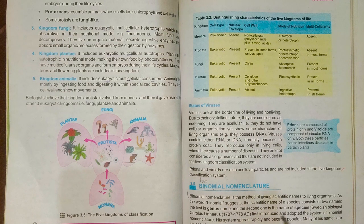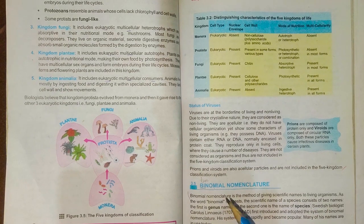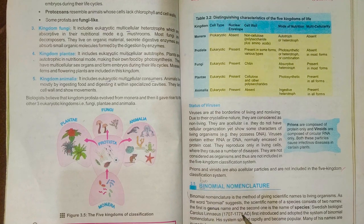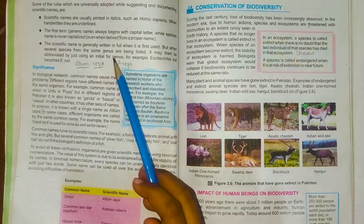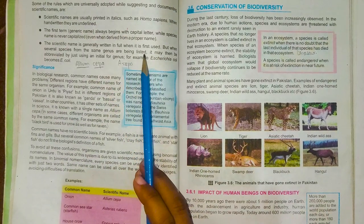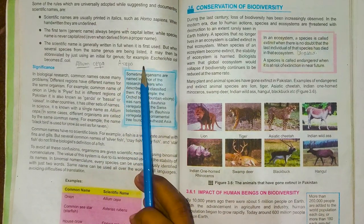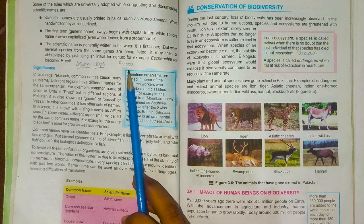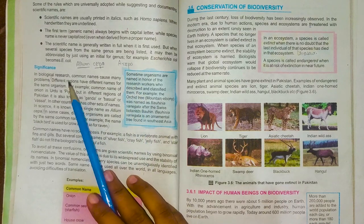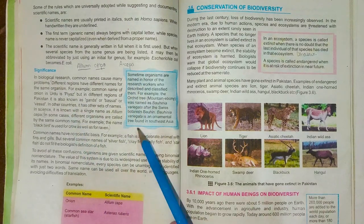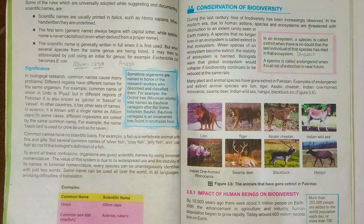In the binomial nomenclature long question, first give the definition, then its introduction — that Carolus Linnaeus introduced it — then explain the three scientific rules. These rules are also an important separate short question for the board. The significance of binomial nomenclature will also come within the long question.